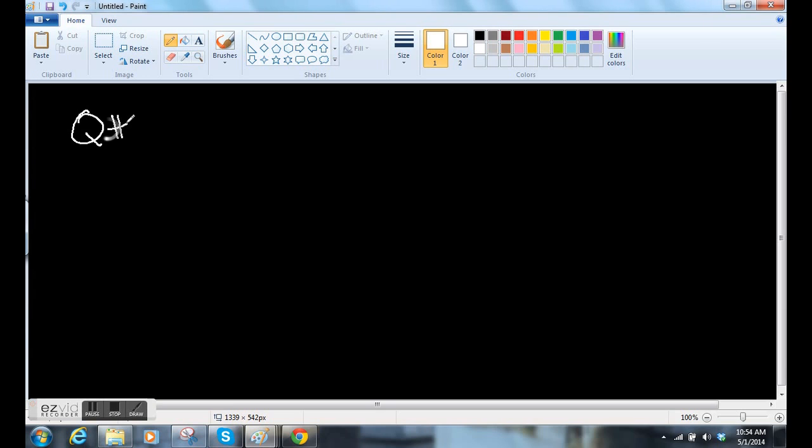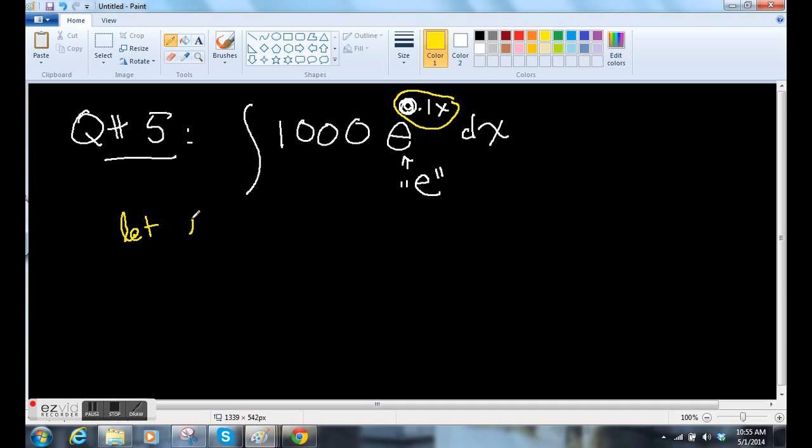Last one. Let's also look at question number 5. I know I went from 9 to 5. It's fine. This one to me actually seems a little bit harder. 1000e to the 0.1x dx. So the problem, again, focus all of your attention on this exponent. It's a messy function exponent. We want it to be a simple variable. So let u equal the exponent, 0.1x.